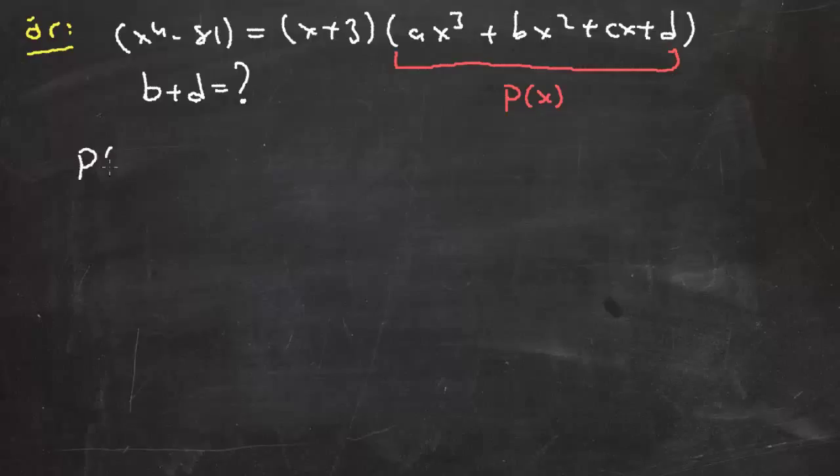Şimdi bu durumda P(x)'i yazacak olursak P(x) ne? (x⁴ - 81)/(x + 3). Tabii burada çarpanlarını ayırıp sadeleştirme işlemi yapıp sonucu bulabiliriz. Fakat az önceki kuraldan bizim aradığımız şey neydi? Çift dereceli terimlerin katsayıları toplamı. O zaman bizim bulmamız gereken şey ne? [P(1) + P(-1)]/2 değil mi?